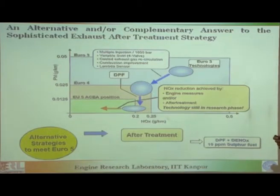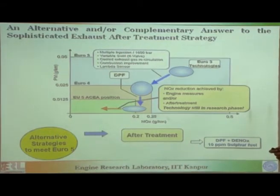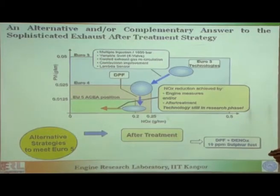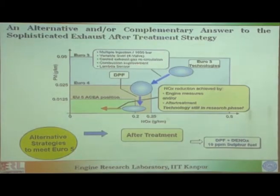In actual practice you can do multiple injections in the engine. So, in one cycle you can do a lot of pre-injections, post-injection, and optimize it. You can have variable swirl — for variable swirl you can actually play with 4 valves. That is why you see most modern engines now come with 4 valves for this reason. You can have cooled EGR, and once you have cooled EGR you can control the NOx emissions. You can have improvement in combustion — combustion chamber bowl optimization, injection strategy, etcetera.